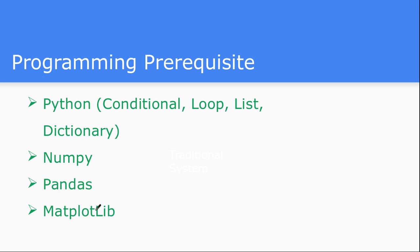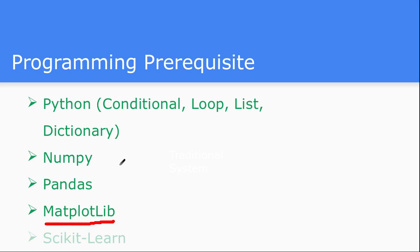Matplotlib — the matrix plot library — is especially for plotting purposes. If you have data and you want to visualize your model or your data, such as how classification looks or what type of data is associated with what kind of class, you need to visualize it, and that is where Matplotlib will be helpful. These are some of the programming-side prerequisites.